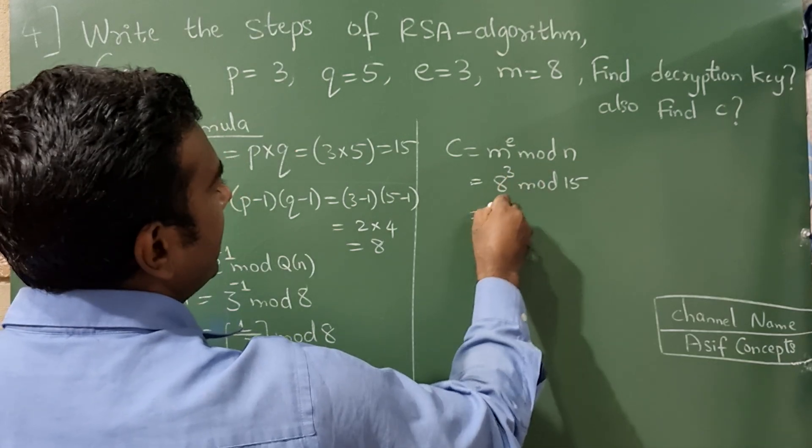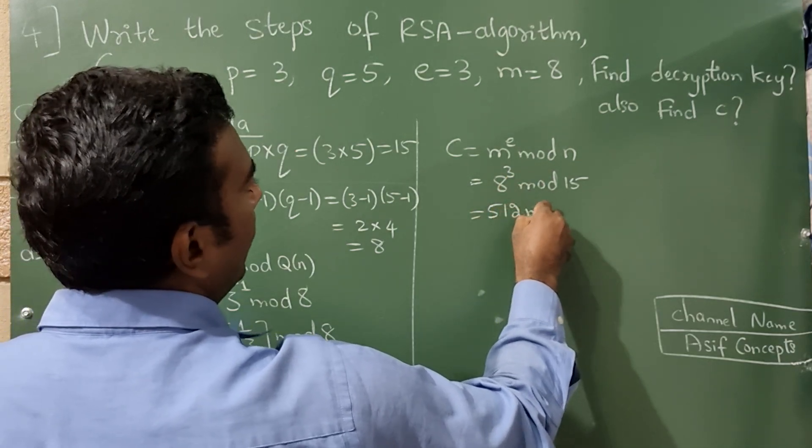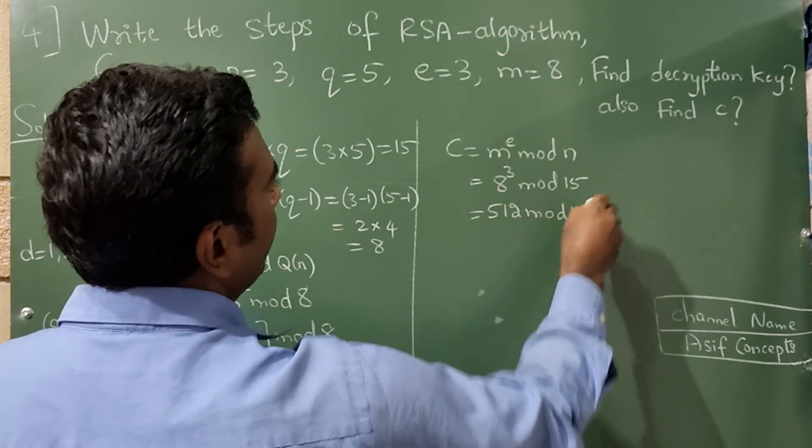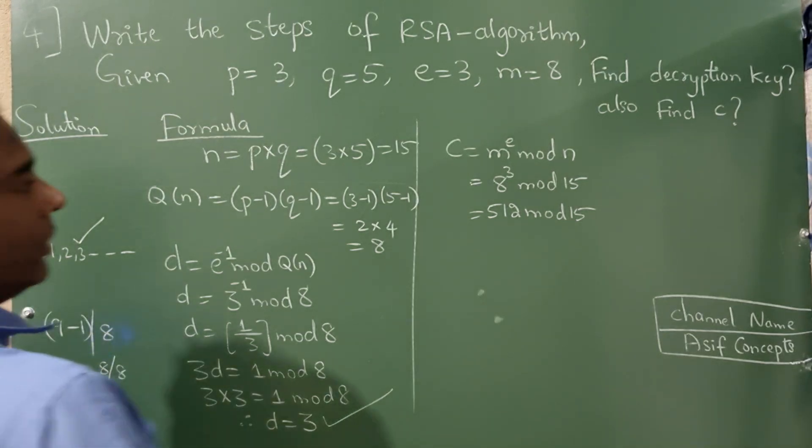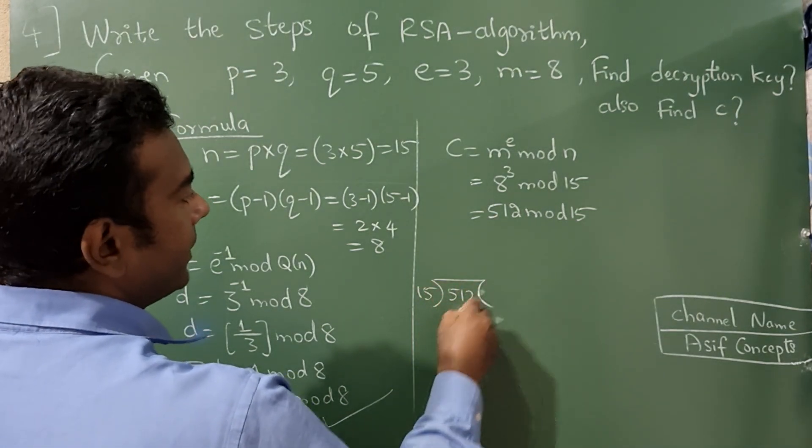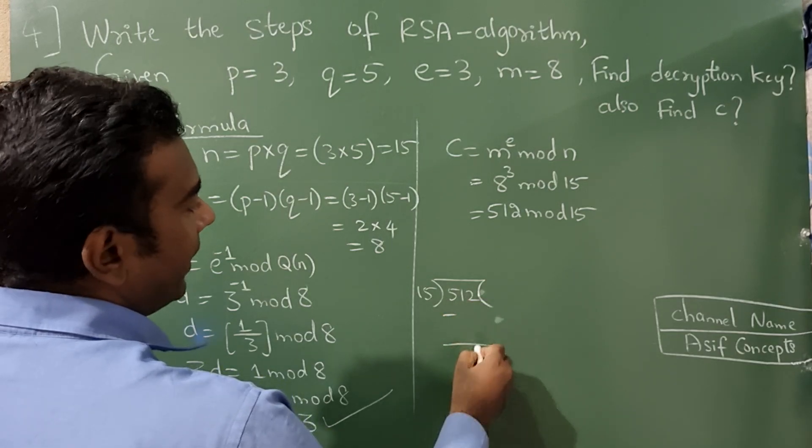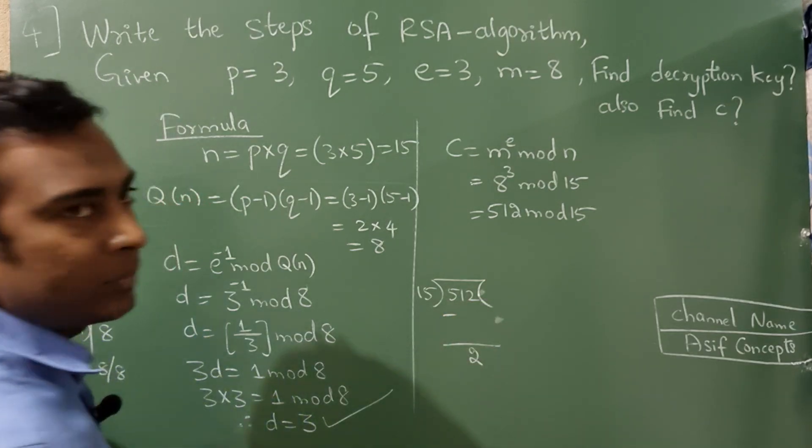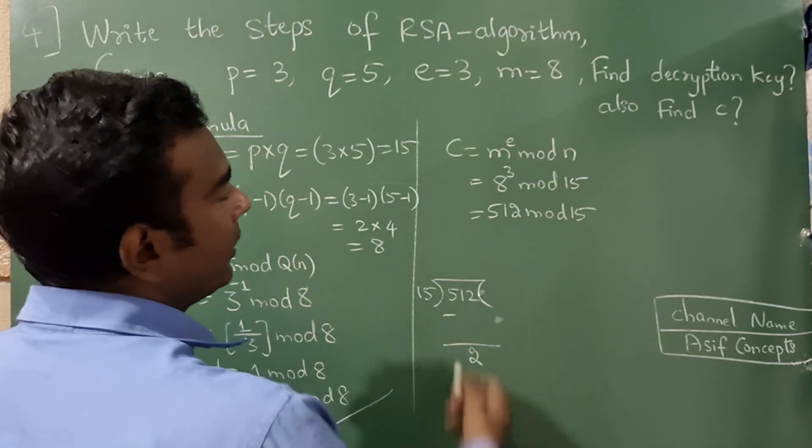So 8 raise to 3 is 512 mod 15. Either you can solve this by like this, you will get reminder as 2.